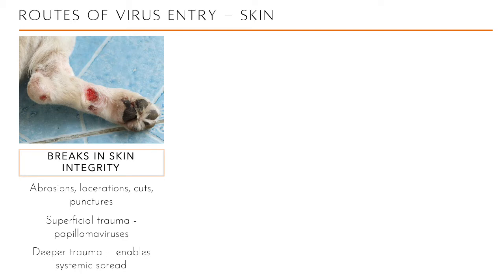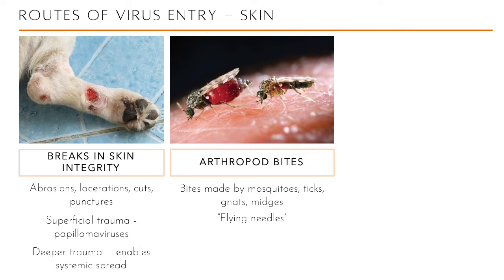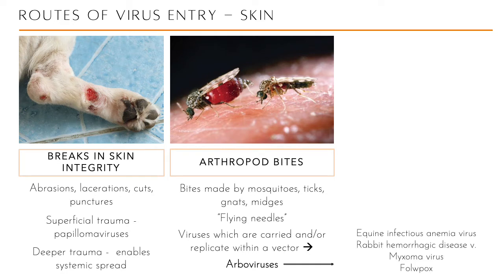Arthropod bites — by mosquitoes, ticks, gnats, and midges — are another cause of breaks in skin integrity. These arthropods harbor many microorganisms and are called vectors, sometimes referred to as 'flying needles' because they create breaches in the skin that viruses exploit. Viruses that are carried by or replicate within a vector are called arboviruses.